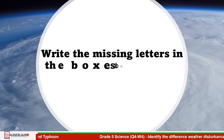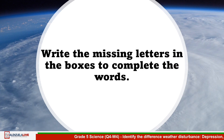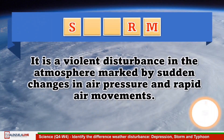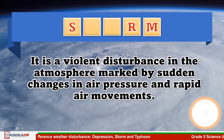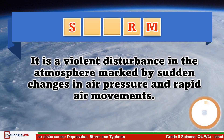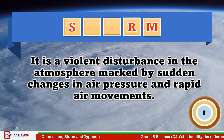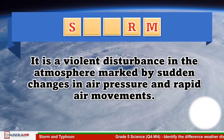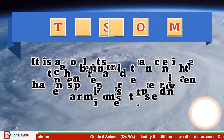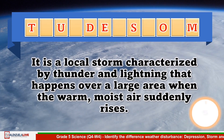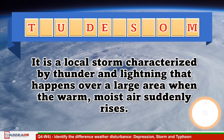Before we proceed, let's have first a short activity. Write the missing letters in the boxes to complete the words. Use the given clues as your guide. It is a violent disturbance in the atmosphere marked by sudden changes in air pressure and rapid air movements. It is a local storm characterized by thunder and lightning that happens over a large area when the warm, moist air suddenly rises.